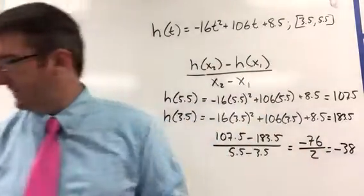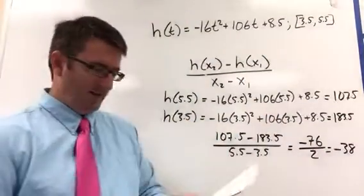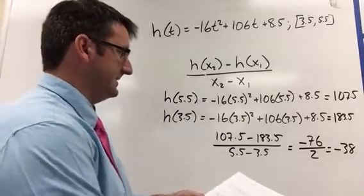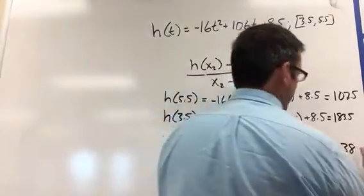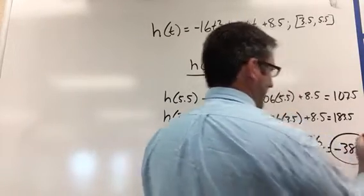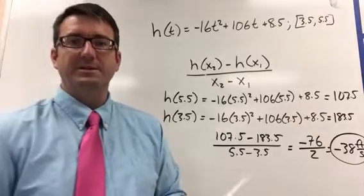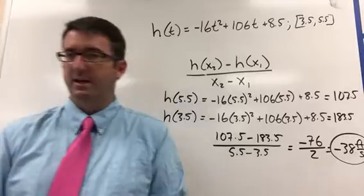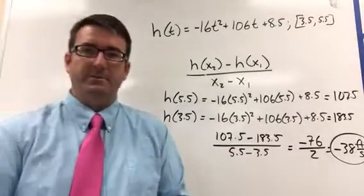And this was given to us in feet. The height is in feet. The time is in seconds. So this is going to be negative 38 feet per second. That's our average rate of change, or in this particular case, average speed over that interval.